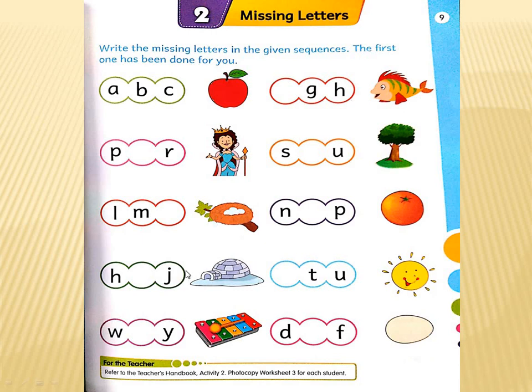Now come to this one. H blank J. This is a picture of an igloo. Igloo, what is the beginning letter of igloo? I. H I J. So what is the missing letter? I. Here we will write I.